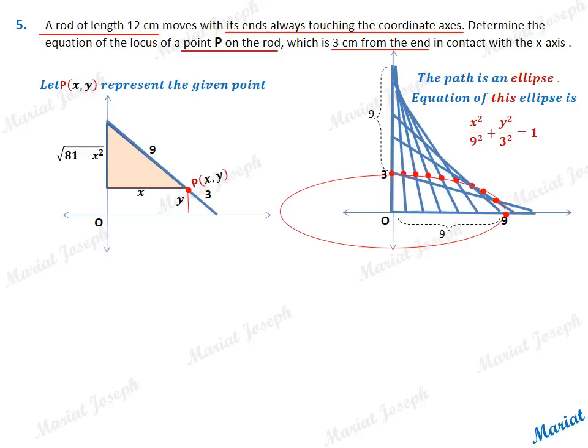Now in the bigger triangle, using Pythagoras theorem, calculate the vertical side as root of 81 minus x squared. Also, the third side in the smaller triangle is root of 3 squared minus y squared, which is root of 9 minus y squared.